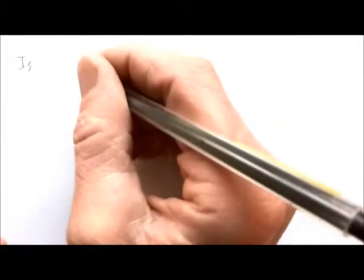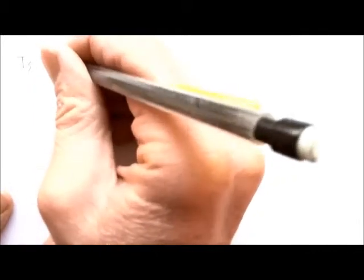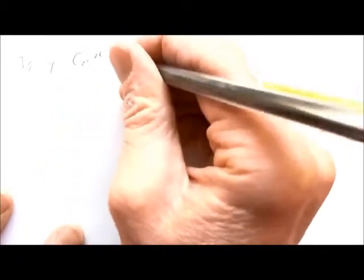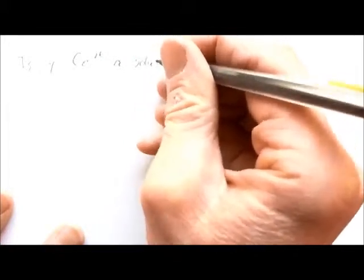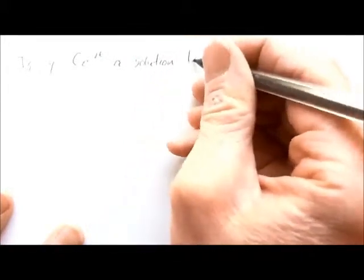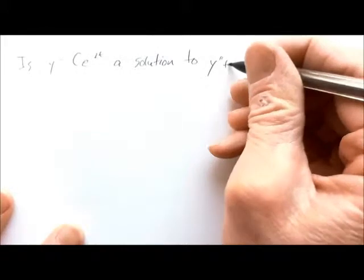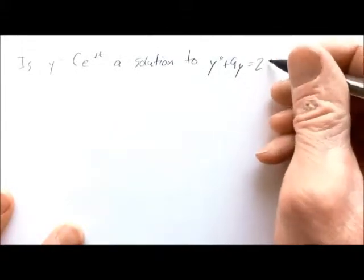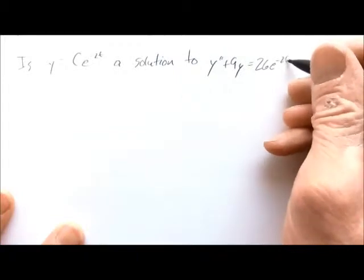For our last example in this section, the question is: is y equals c e to the minus 2t a solution to y double prime plus 9y equals 26e to the minus 2t?